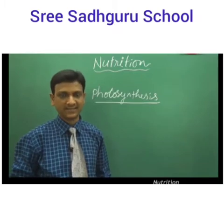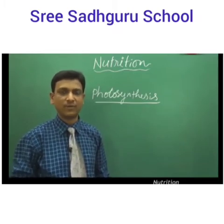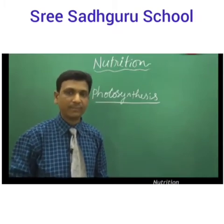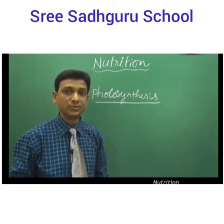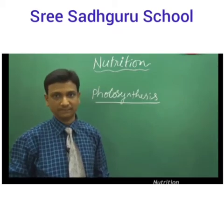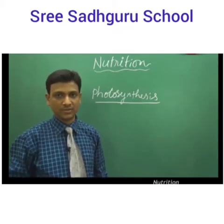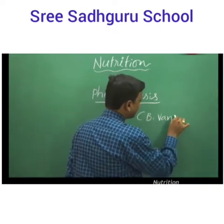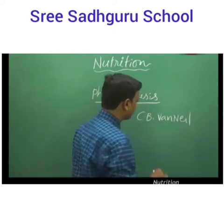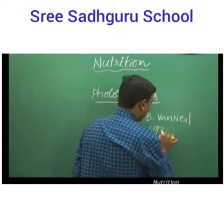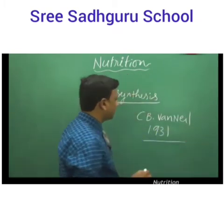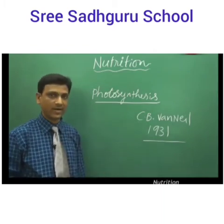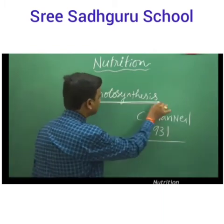People had different ideas, like plants using only soil to make food, but it was not clearly known how plants were able to prepare food material. Later, it was found by a scientist named CB Van Neel. In 1931, he discovered the process by which plants were able to make food, and he named it photosynthesis.